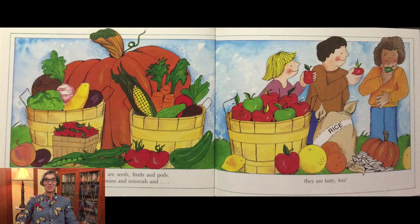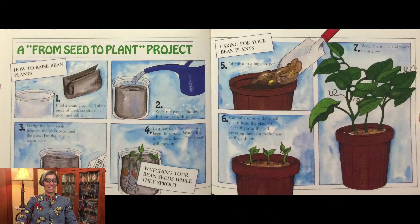Now, would you like to do a project? Let's plant some bean seeds. The first step is to find a clean glass jar. Take a piece of black construction paper and roll it out. Next, slide the paper into the jar and fill the jar with water. After that, take the bean seeds and wedge them between the black paper and the glass, and put the jar in a warm place.